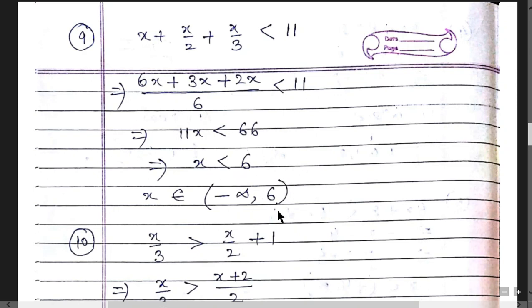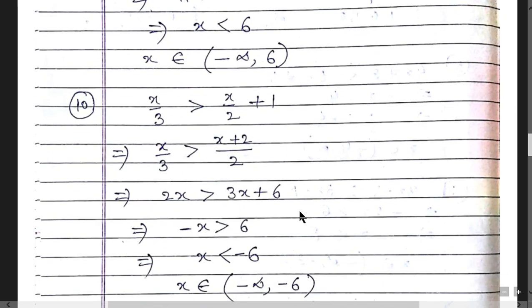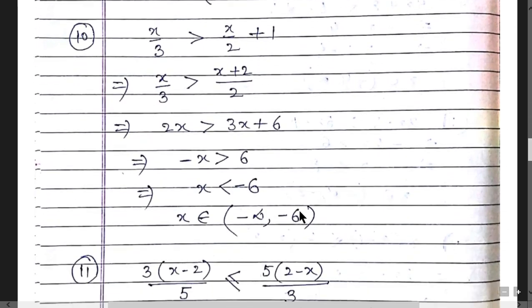Question 10: x/3 > x/2 + 1. Taking LCM and cross-multiplying gives 2x > 3x + 6, which simplifies to -x > 6, or x < -6. The answer is (-∞, -6).